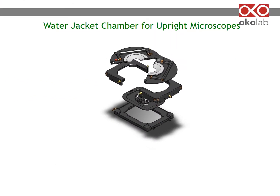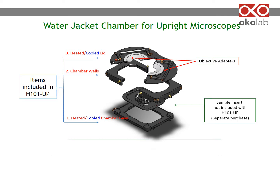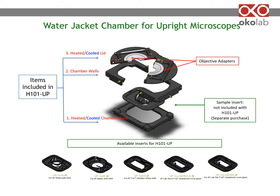Here is an example of a water jacket chamber for upright microscopes. Its components are a heated/cooled base, chamber walls, and a heated/cooled lid. The lid slides on the chamber walls as you look for your region of interest. The chamber comes with adapters for objectives of different diameters. You have to add an insert to hold your sample.